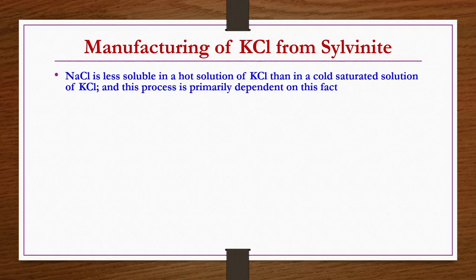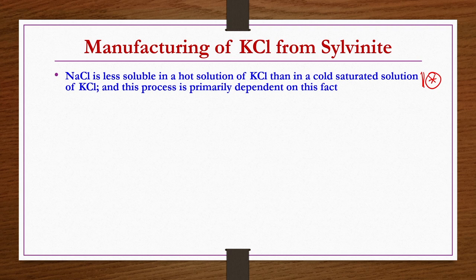In this lecture, we will discuss how to get potassium chloride by different approaches. The first one is manufacturing of KCl from sylvanite. The basis of this process is that NaCl is less soluble in a hot potassium chloride solution than in a cold saturated potassium chloride solution. This basic fact is the basis for KCl production from sylvanite.